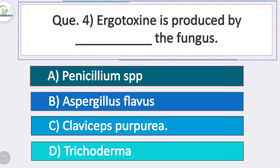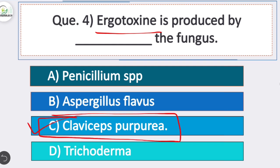Question 4: ergotoxin is produced by which fungus? Option C is correct — Claviceps purpurea, whose sclerotia contain ergotoxin. The ergot-causing fungus Claviceps purpurea produces ergotoxin stored in its sclerotia.